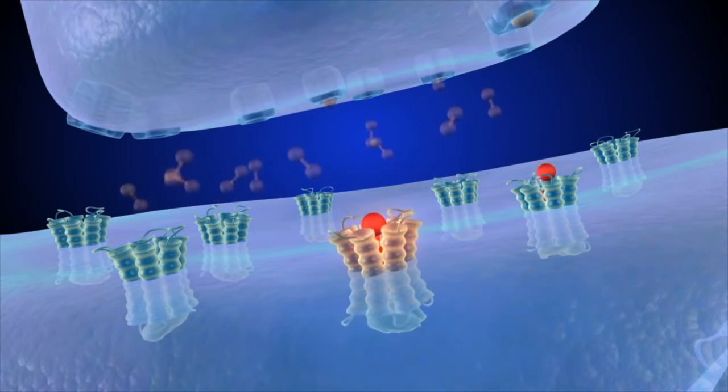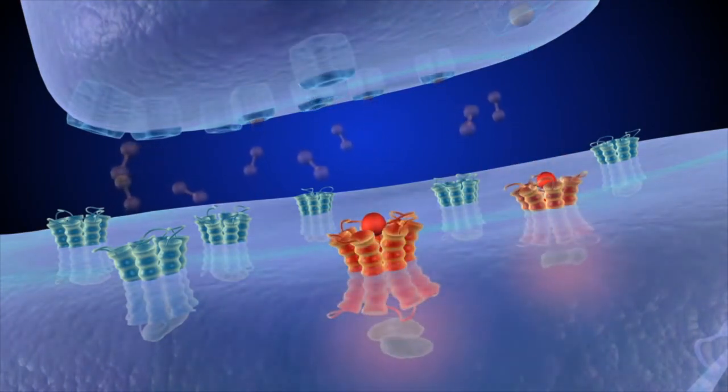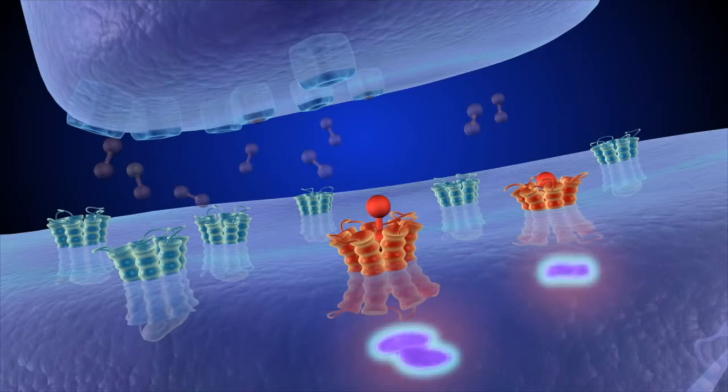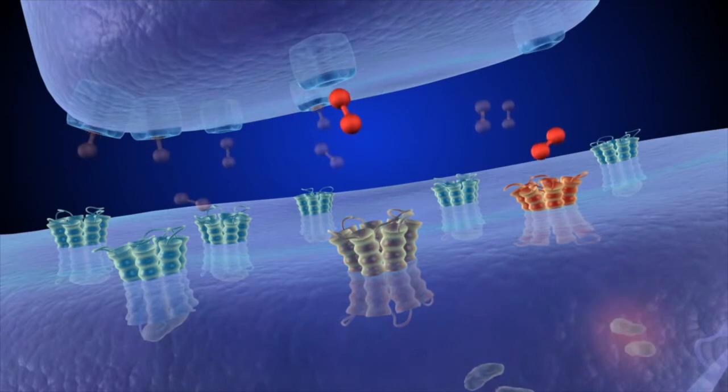When dopamine binds in the receptor's exterior part, like a key into a lock, it triggers a cascade of events inside the receiving cell. Other proteins attached to the interior part of the receptor carry the signal onward within the cell.